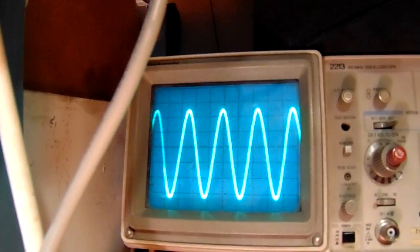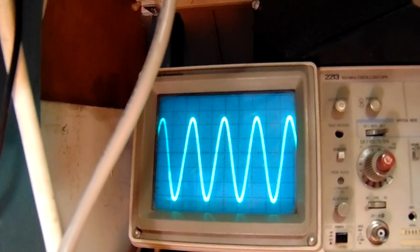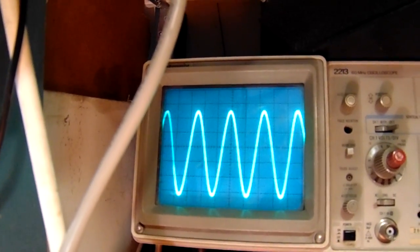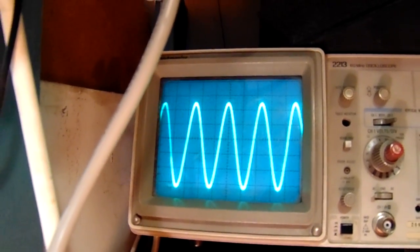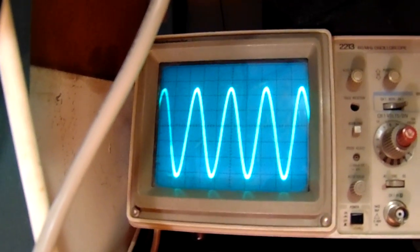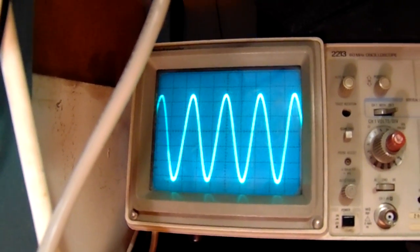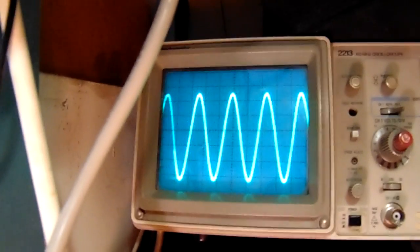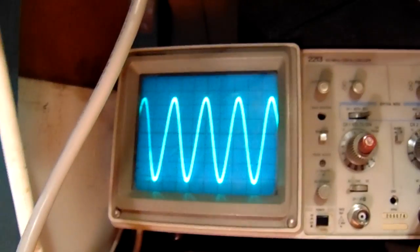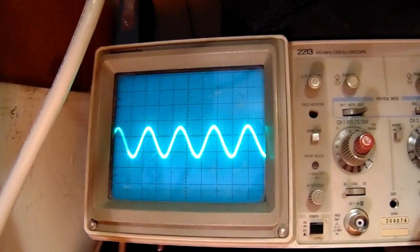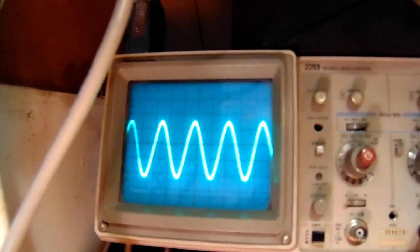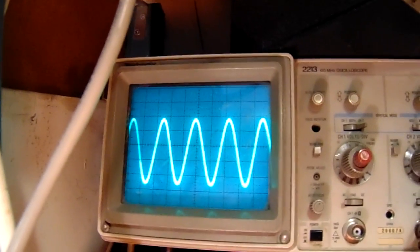Of course when I tune the ferrite core on the IF coil it will differ, because then the frequency changes somewhat. The resonance frequency changes somewhat. But it's clear to see how this coil is tuned to this frequency.